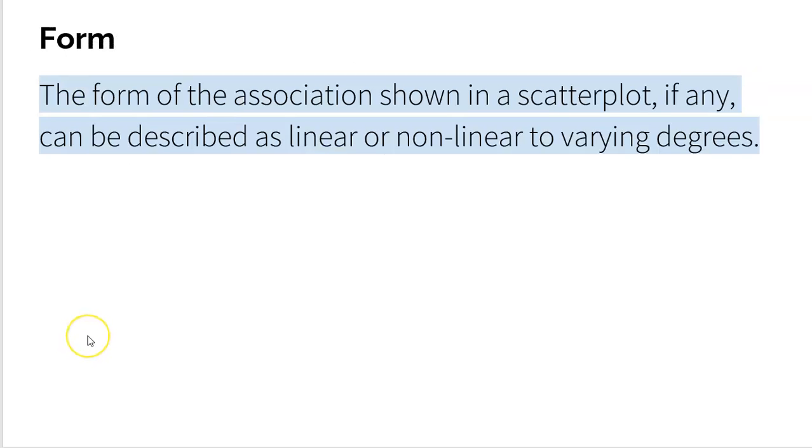All right, then we got form. The form of the association shown in a scatterplot, if any, sometimes you might not have any form, can be described as either linear or nonlinear. So to be honest, when we talk about form, we talk about no form, okay? And I'll show you what that means here in a little bit.